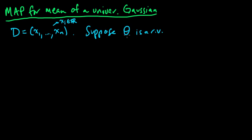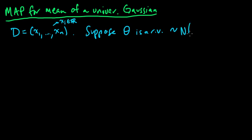Theta we're going to interpret as the mean of the Gaussian. Theta is a random variable, and it's distributed according to some distribution. Let's choose it to be normal with mean mu and variance 1, just to keep things simple.